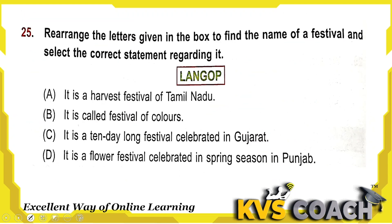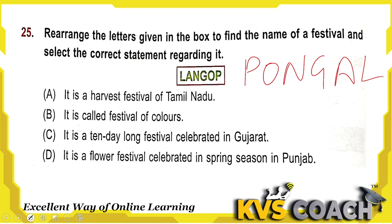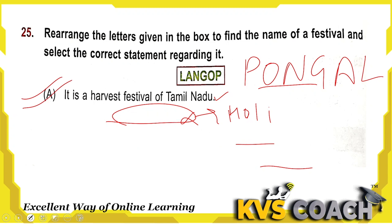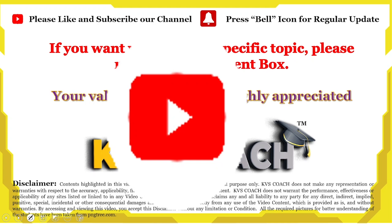Next: rearrange the letters to find the name of a festival and select the correct statement regarding it. The letters form the word Pongal. Pongal is a harvesting festival of Tamil Nadu — this is the correct statement. It is not the festival of colors (that is Holi). It is not a 10-day festival from Gujarat (that is Garba/Navratri). Option A — Pongal is a harvest festival from Tamil Nadu — is the right answer.